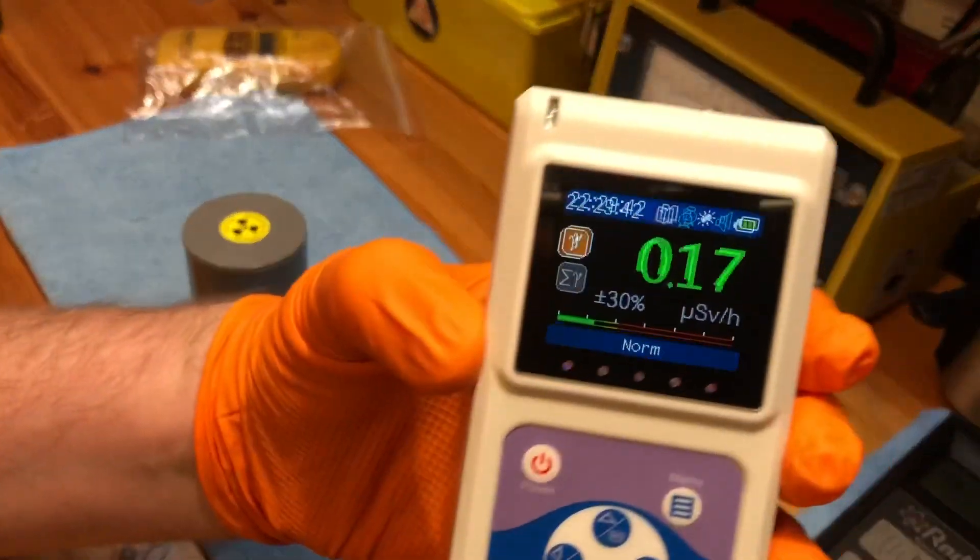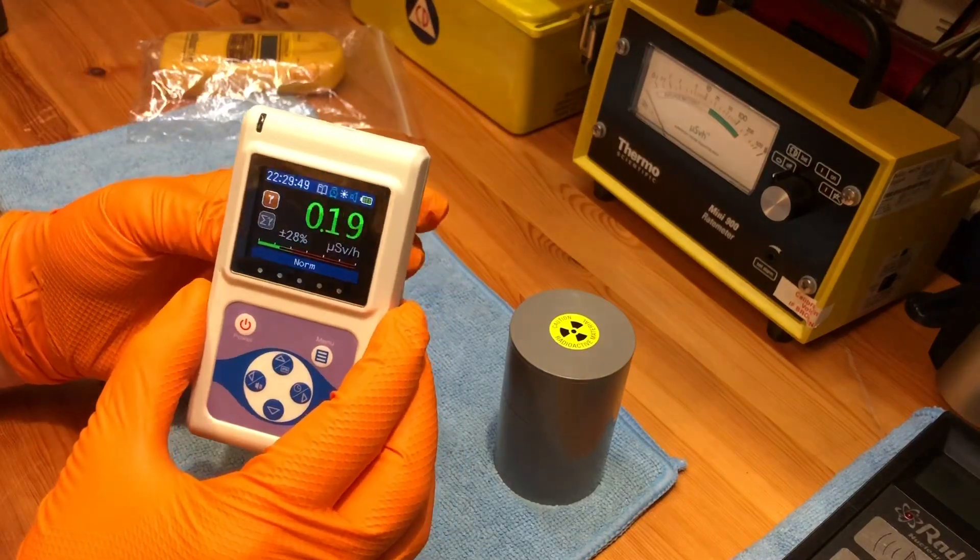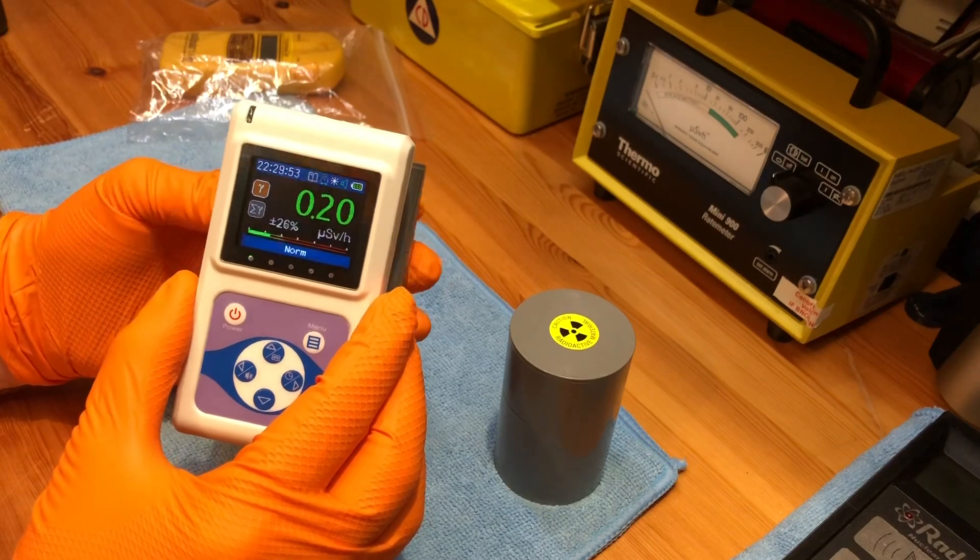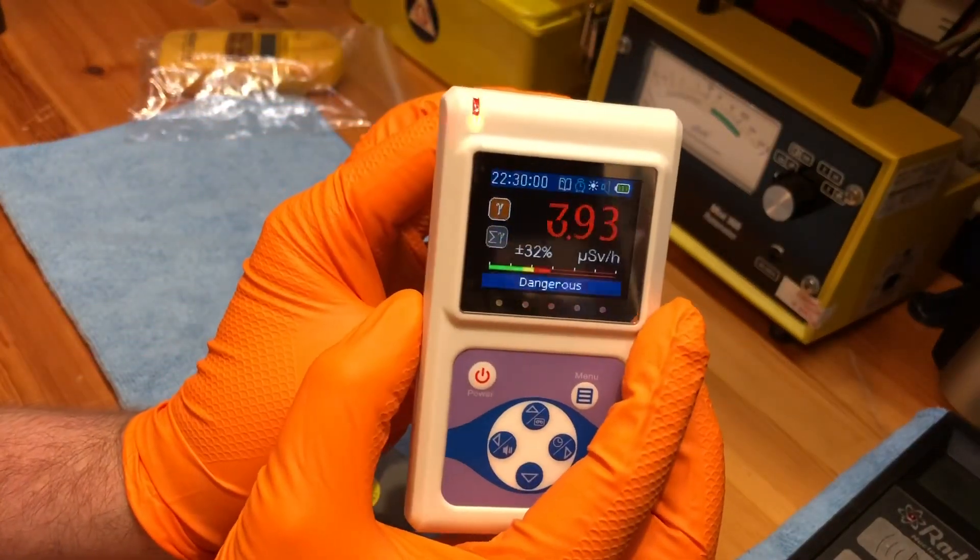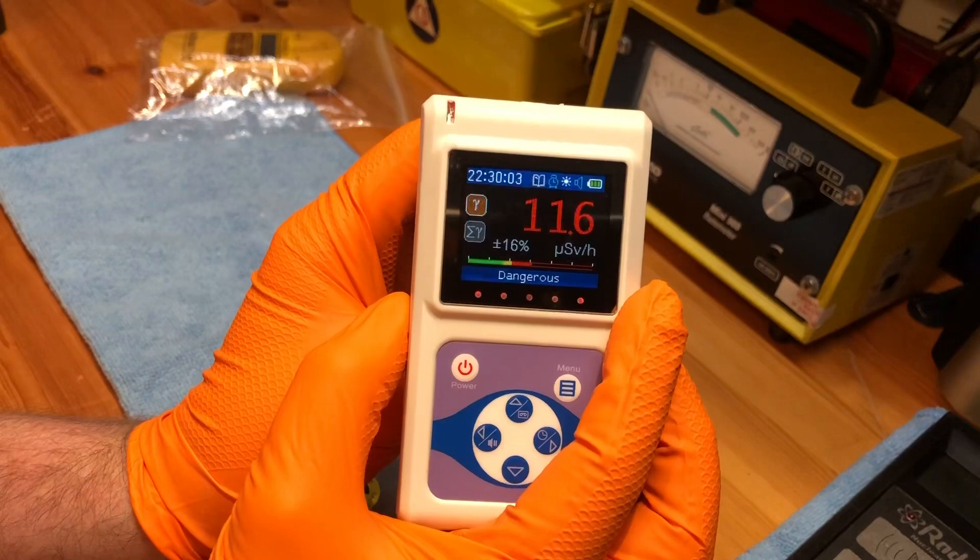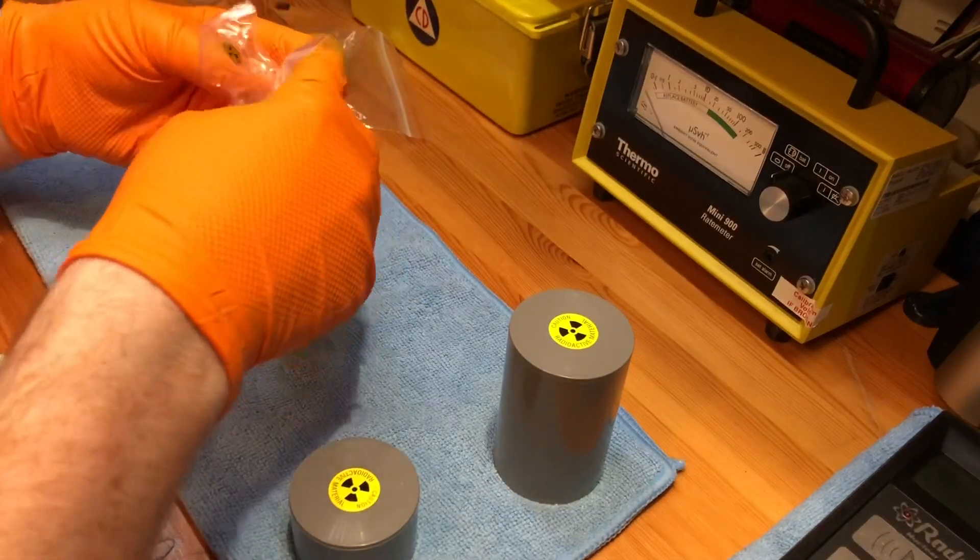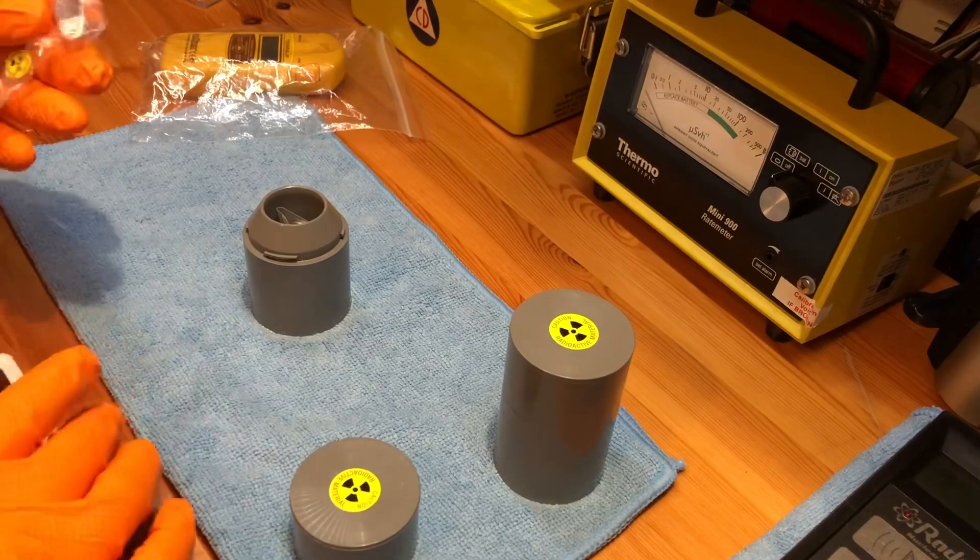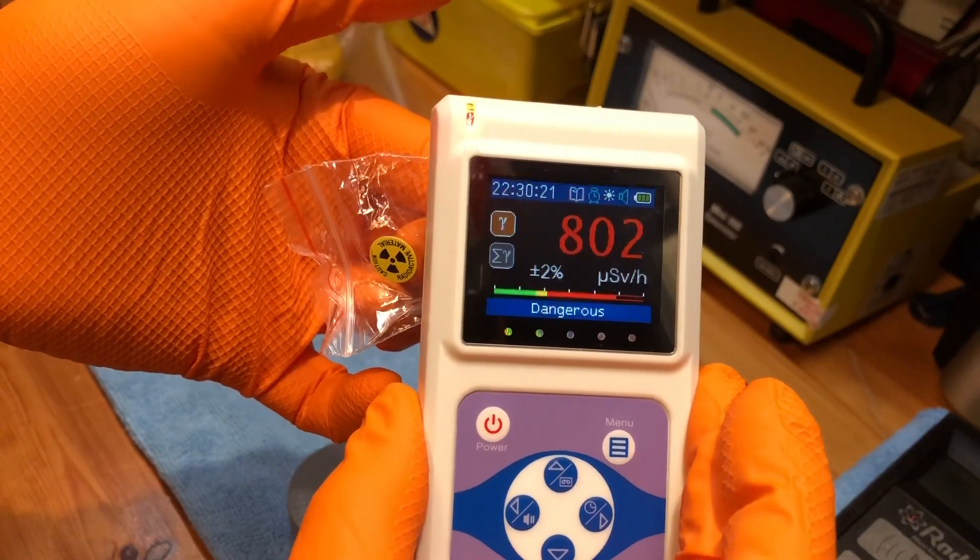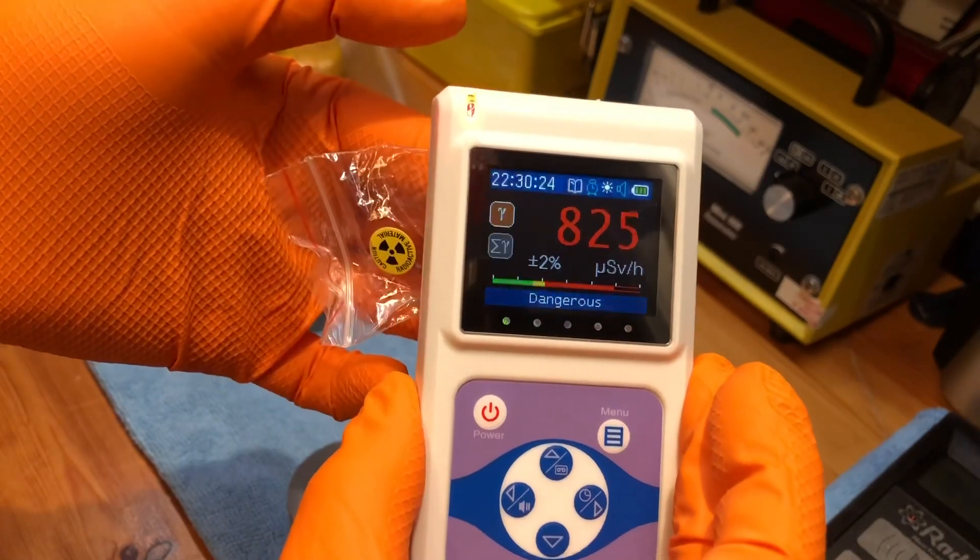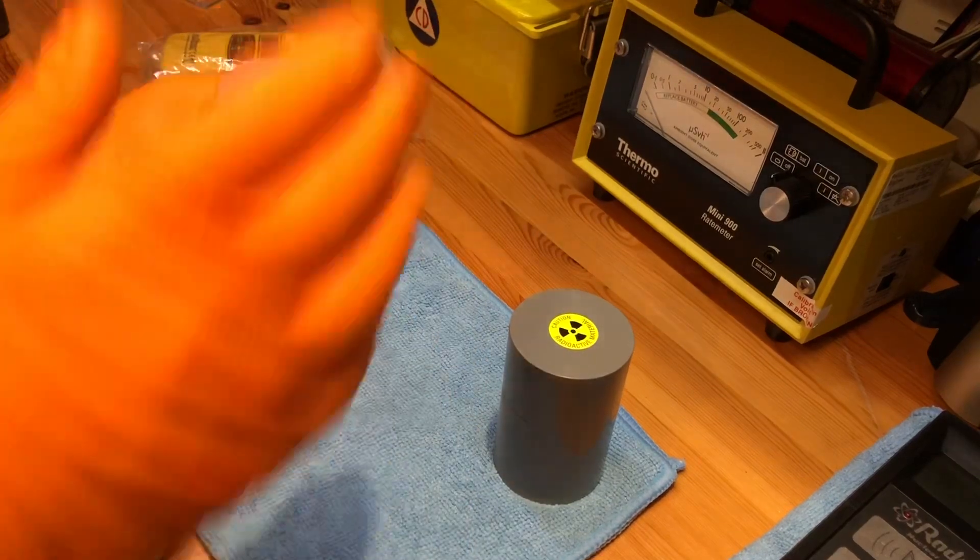So background in the shed has dropped to 0.18. So I'll do an outside just to show you again. And as you can see there is literally no beta at all. And then with the lid off it jumps up to 12, and then with them actually out I'll do the strongest one. So that's what I'm protecting myself from. Yeah, definitely good idea to have these.